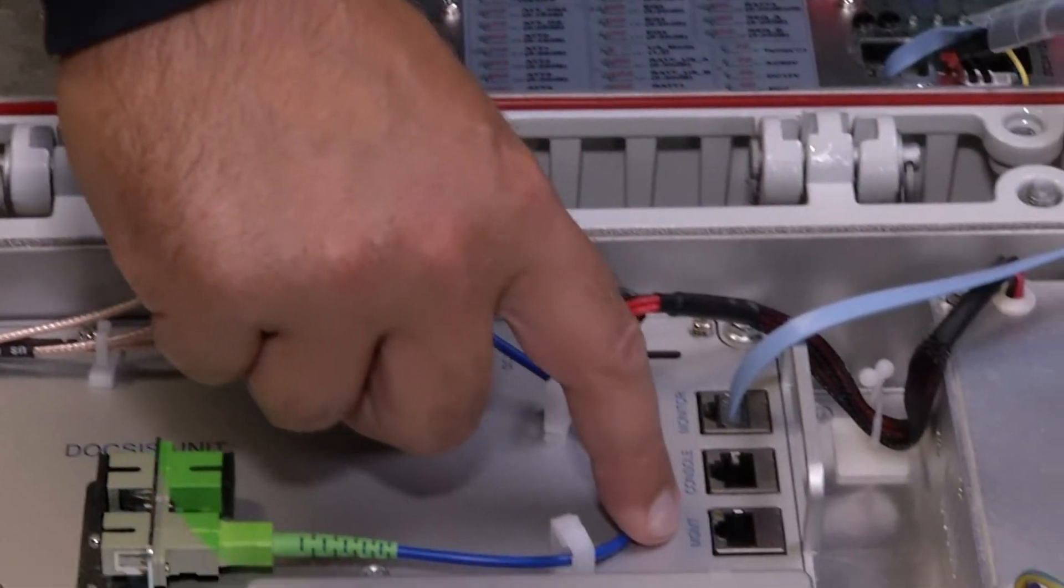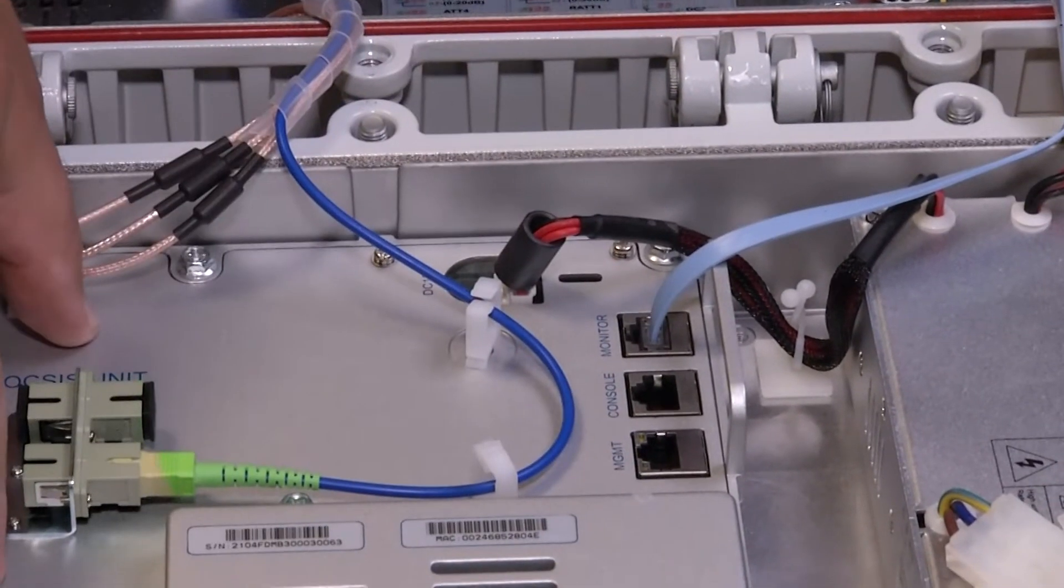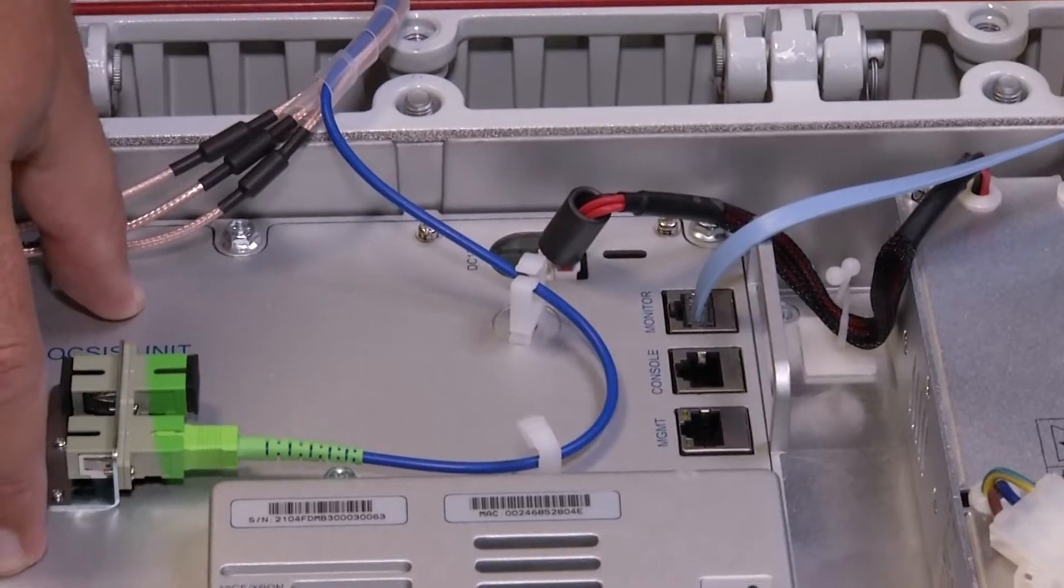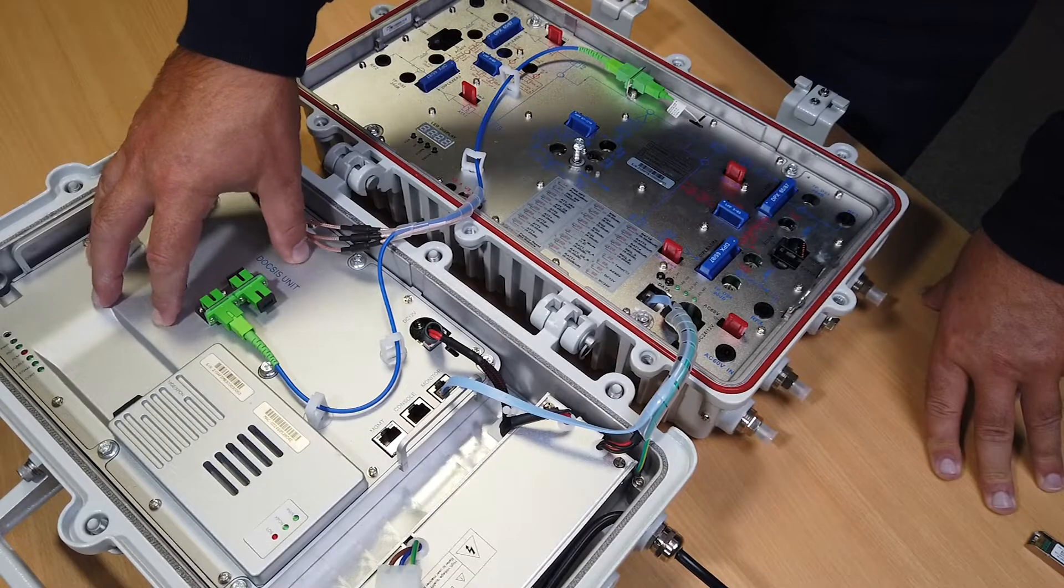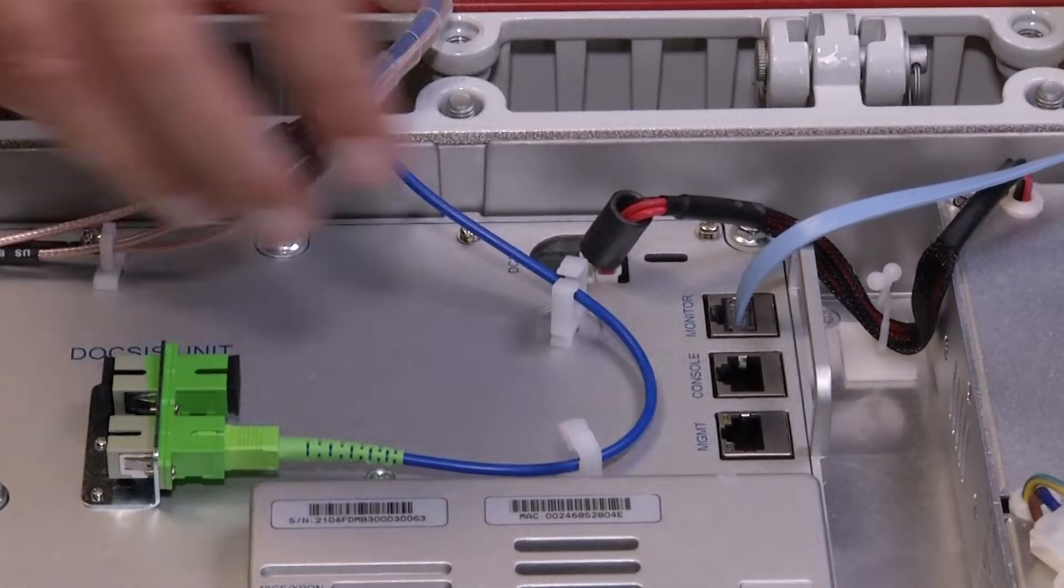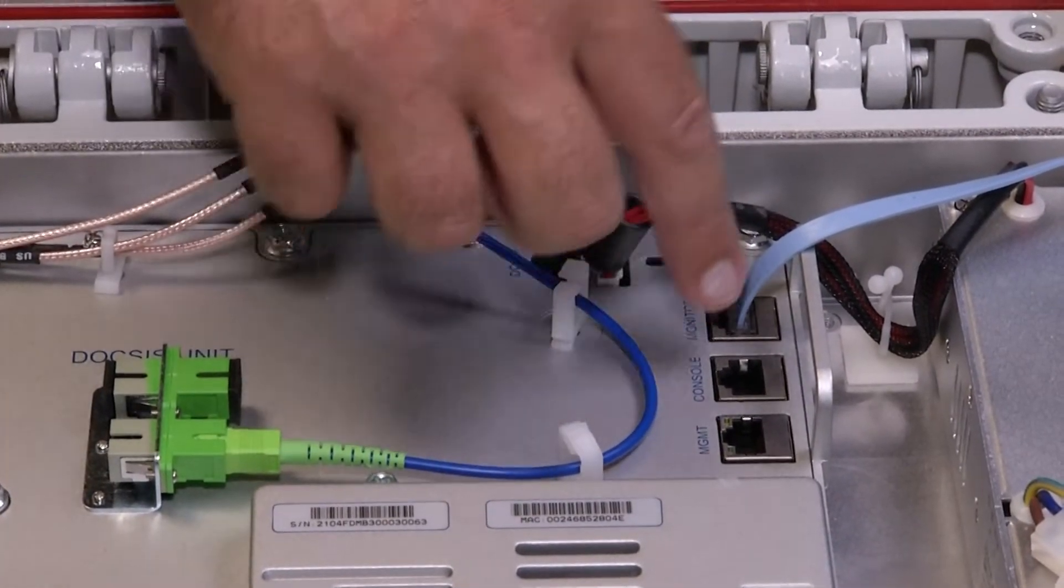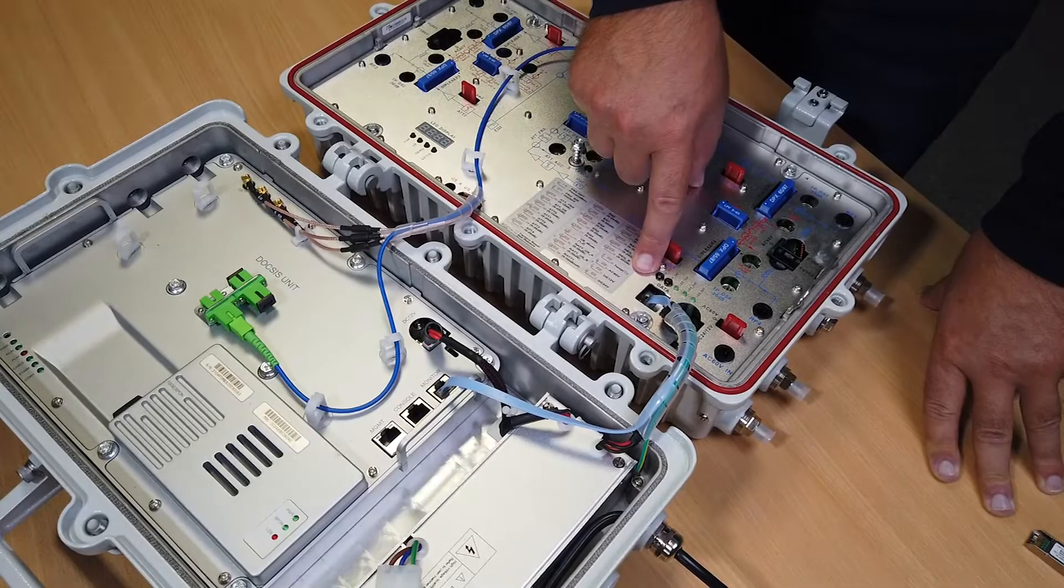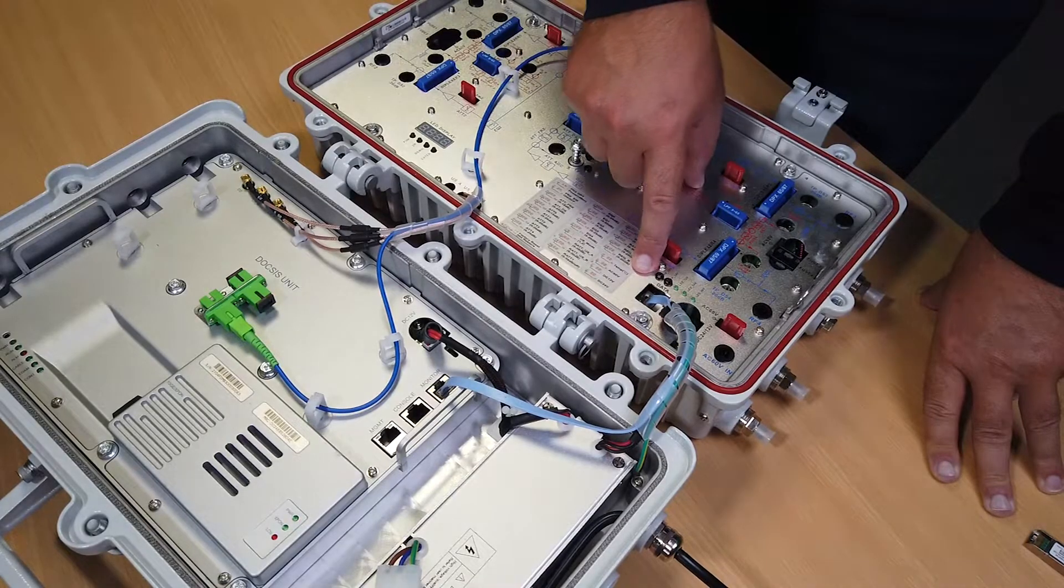Located on the DOCSIS unit is the management port. Here's the management port, which allows you to connect externally via IP. Here's the console for initial configuration or debugging. Here's the connection to the TV node, which allows you to deal with all configurations remotely.